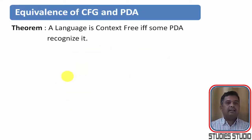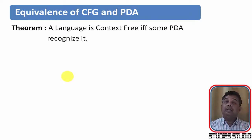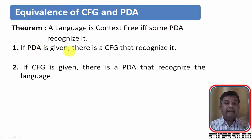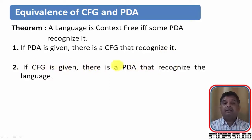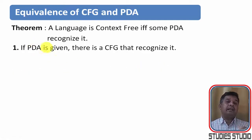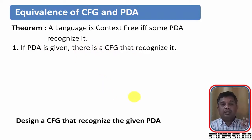As we have already seen, the theorem says a language is context-free if and only if some PDA recognizes it. It means if a PDA is given there is a context-free grammar that recognizes it, and if a context-free grammar is given then there is a PDA that recognizes it. The second part we have already done; we will be doing this part — that is, given a PDA, how can we construct a context-free grammar.